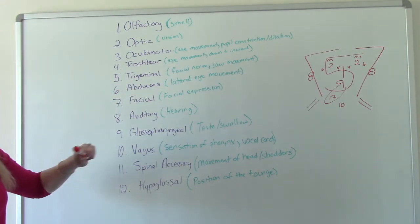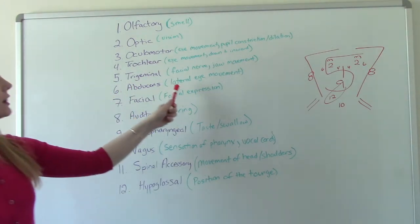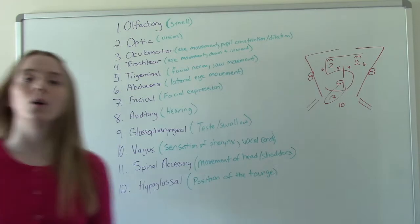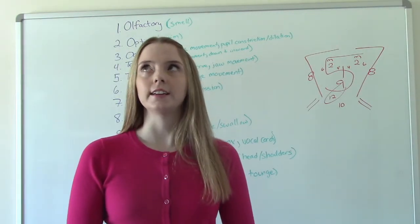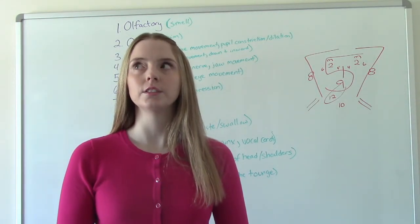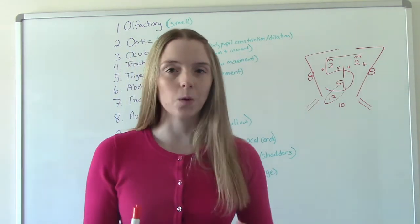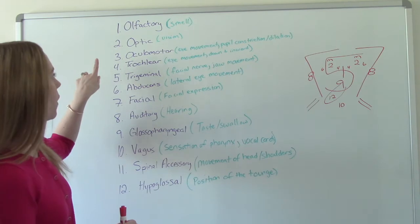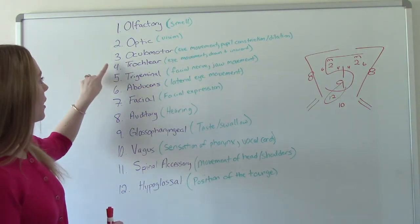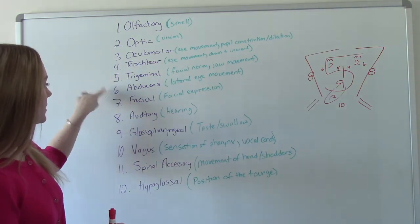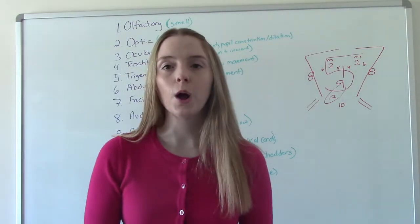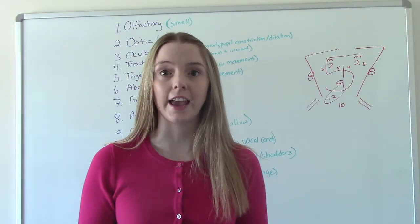Number six is our abducens. So this is our lateral eye movement. So can you look side to side? Number four was looking at our nose. Number six is looking side to side. And actually, a lot of the eye ones you can put together. So like our number three, our number four, our number six, we can move those all together when we do our six cardinal fields of gaze.